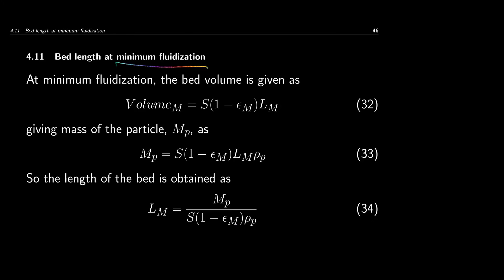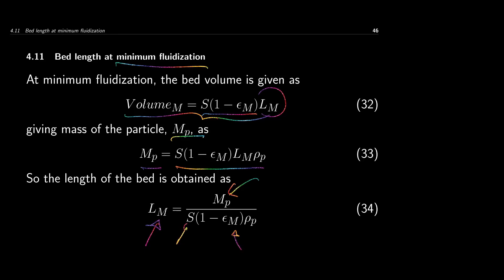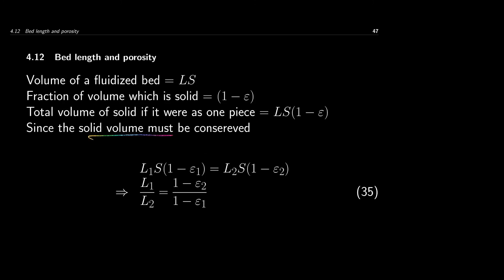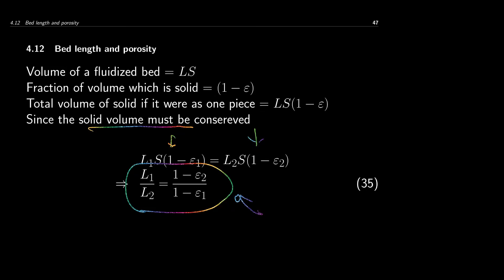For bed length at minimum fluidization: the volume of solids equals S × L_m × (1 - epsilon_m), and the mass m_p equals this volume times rho_p. Knowing the cross-sectional area S and epsilon_m gives the bed length at minimum fluidization. Since solid mass must be conserved across conditions, equating two states yields L1/L2 = (1 - epsilon_2)/(1 - epsilon_1), which is used to find the void fraction or bed length under different operating conditions.